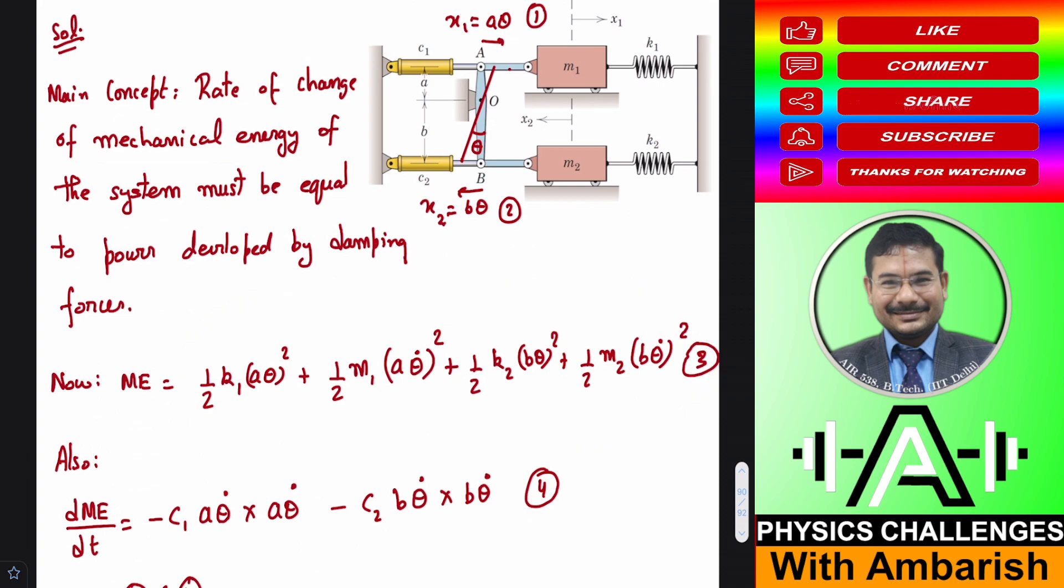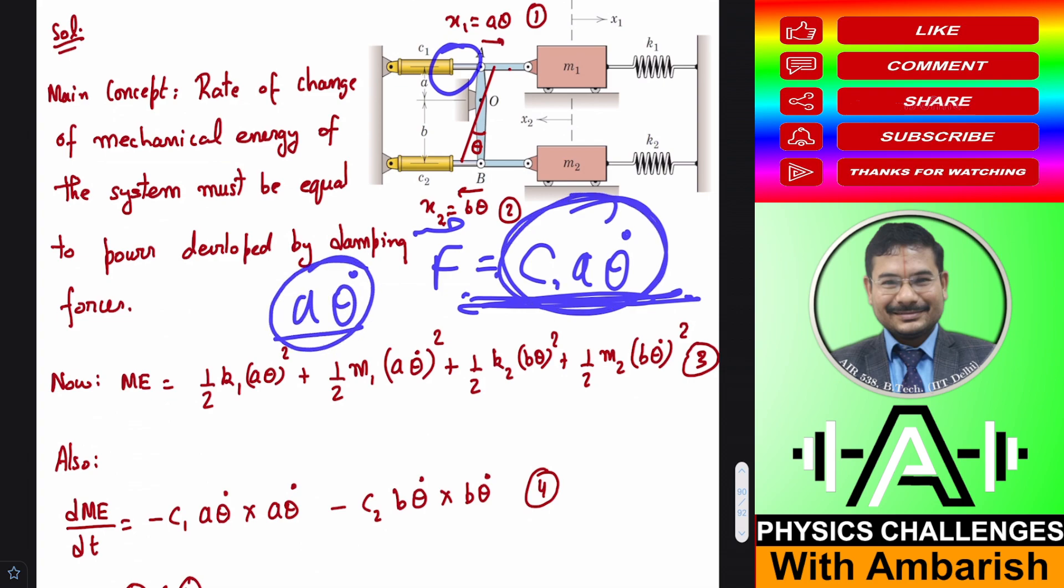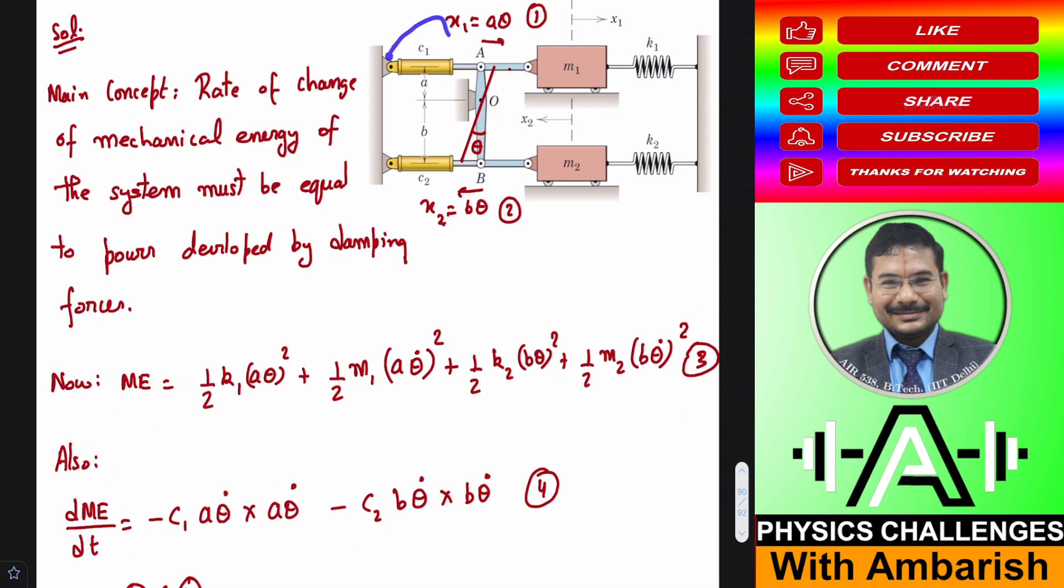So this is the mechanical energy of the system and what will be the rate of change of mechanical energy? That will be the power developed by the dampers. You see the force of the damper is proportional to the velocity. So the velocity of this link is a theta dot, so force becomes c into a theta dot. So this is the force and the power developed is force dot velocity. So this is the force due to damper and velocity is a theta dot and of course force and velocity are in opposite direction case of viscous damping. So power developed becomes a theta dot into c a theta dot with a negative sign. So that's what I've written. Here the power developed by the damper is minus c1 a theta dot into a theta dot. So this is the power developed by upper damper. Similarly, the power developed by the lower damper is force is c2 b theta dot and velocity is b theta dot and minus sign for the cos 180 factor.